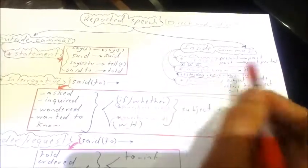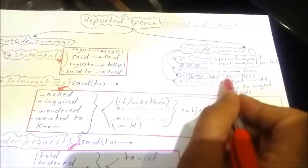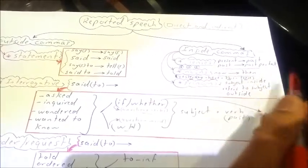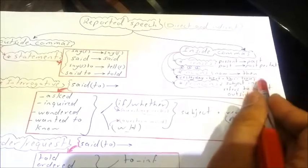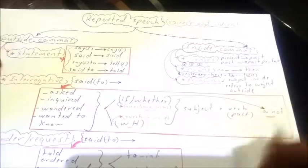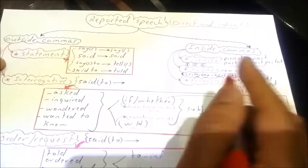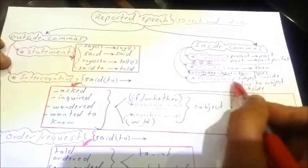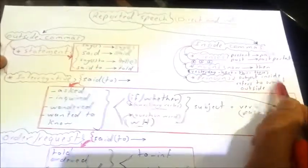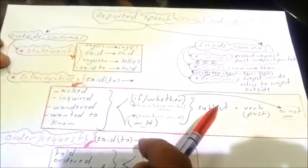Then we have change of words: 'now' becomes 'then', 'yesterday' becomes 'the last day', 'the other day', 'the former day', or 'the previous day'. 'Here' becomes 'there', 'this' becomes 'that', 'these' becomes 'those', 'tomorrow' becomes 'the coming day' or 'the following day'. For pronouns, in most cases the subject inside the comma refers to the subject outside the comma. That is the main rule. Let's move to the examples.